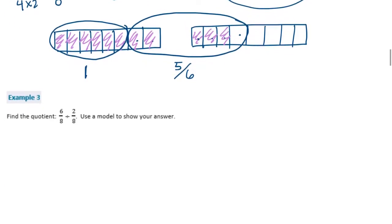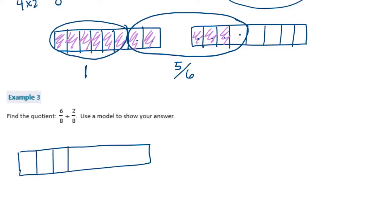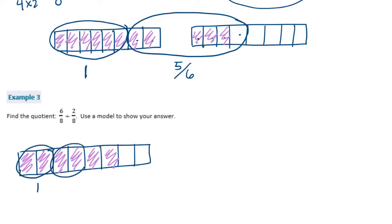Find the quotient of six-eighths divided by two-eighths. Use a model to show your answer. This already has a common denominator, so we can just draw the model. We have six-eighths divided into groups of two-eighths: one group, another group, and another group. This is equal to three.